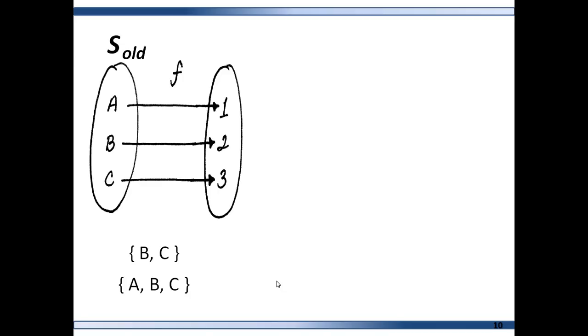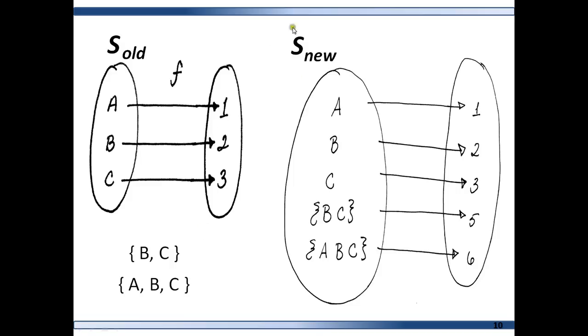Here's an example of that. We have a set we're calling S old. And it has the elements A, B, and C. And the function assigns 1 to A, 2 to B, and 3 to C. But say you're really interested in these subsets here. You're interested in subset B, C, or even the whole set A, B, C. And say you're interested in assigning numbers that have to do with the summation of the values that the function assigns to the individual elements. Then you need another domain. We're going to call this new domain S new. And it has the subsets that we're interested in. Subset B, C, and the set A, B, C.